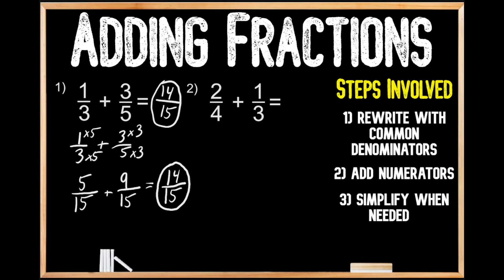Now let's move on to question number two, where we're being asked to add two fourths plus one third. We'll remember that our first step is to rewrite with common denominators, and we'll rewrite these fractions down below for more space. Just like before, we multiply our denominators to find a common denominator: four times three gives us 12, so we'll rewrite these fractions with a common denominator of 12.